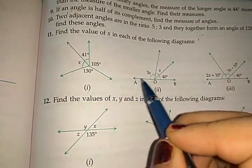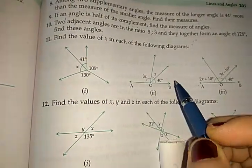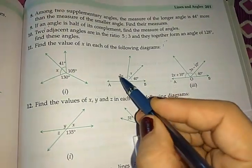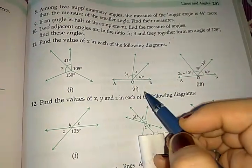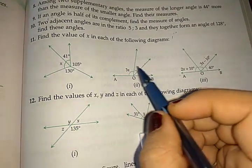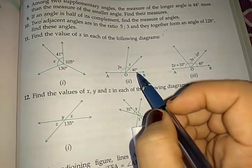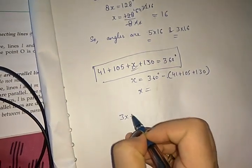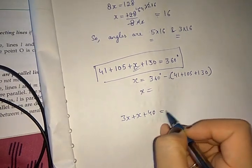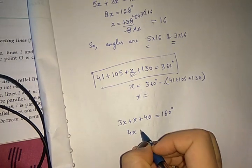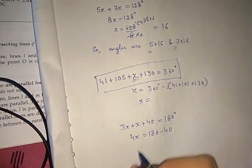In the next case, there is a straight line. On one side of a straight line, the total sum of all angles equals 180 degrees. That means 3x plus x plus 40 equals 180 degrees. Solving: 4x plus 40 equals 180.